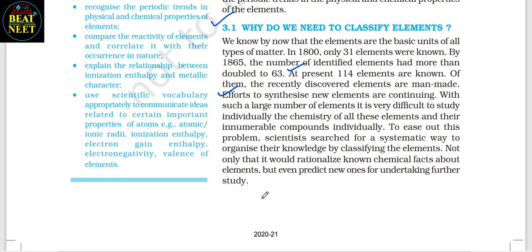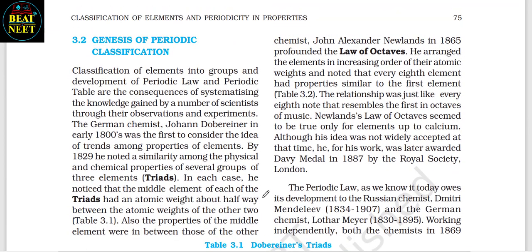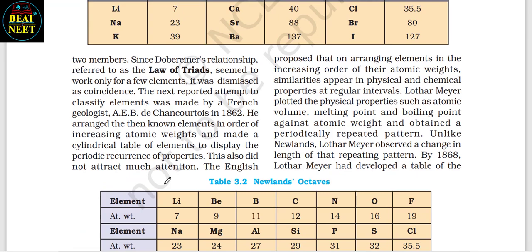3.2 Genesis of Periodic Classification. Classification of elements into groups and development of periodic law and periodic table are the consequences of systematizing knowledge gained by a number of scientists. The German chemist Johann Döbereiner in early 1800 was the first to consider the idea of trends among properties of elements. By 1829, he noted a similarity among the physical and chemical properties of several groups of three elements — called triads. In each triad, the middle element had an atomic weight about halfway between the other two, and its properties were in between those of the two members. Since Döbereiner's relationship, referred to as the Law of Triads, seemed to work only for a few elements, it was dismissed as coincidence.